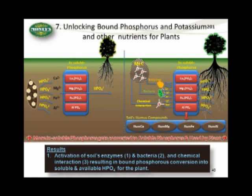The first mechanism is that liquid carbon stimulates the enzymes in the soil. The second mechanism is that it stimulates bacteria in the soil, which then release enzymes and other compounds. It also acts as a catalyst for chemical interactions in the soil. These different processes convert insoluble phosphorus forms into available and usable forms for the plant. They also help to form soil humus compounds, which are extremely important for proper soil structure, giving you more phosphorus availability and creating important humus-based soil structure.